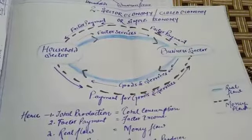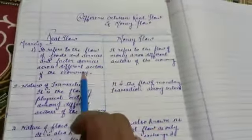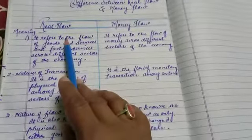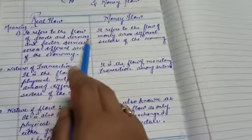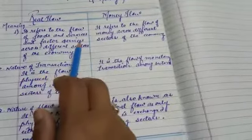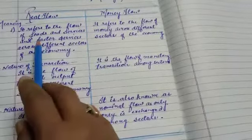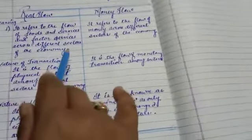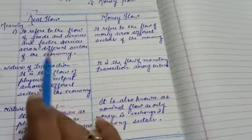On the basis of our study we are in a position to understand the difference between real flow and money flow, which is our today's topic. Real flow means the flow of goods and services and factor services. Firms produce goods and services and provide them to the household sector, and household provides factor services to the business sector — the flow of goods and services and factor services across different sectors of an economy.